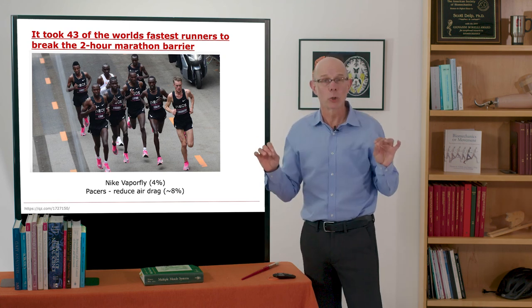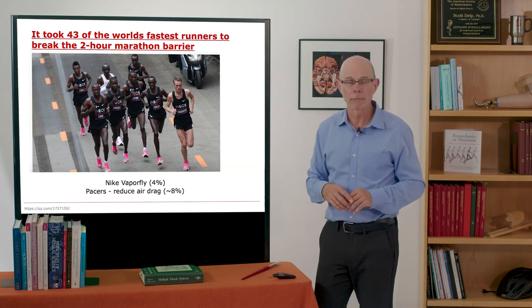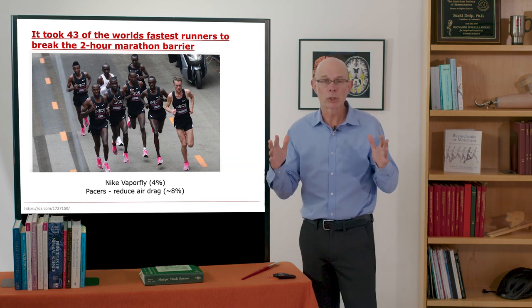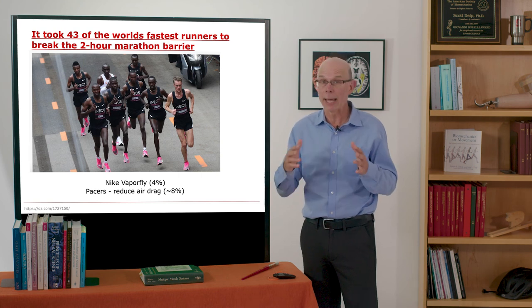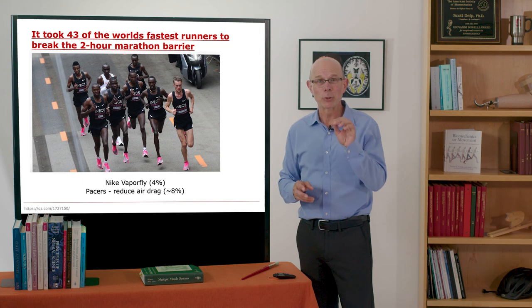With even a roughly tuned exotendon, we were saving six percent, more than the Nike Vaporfly. And optimally tuned in some of our runners, we're saving eight to ten or even twelve percent. That might enable you to break the two-hour marathoner.